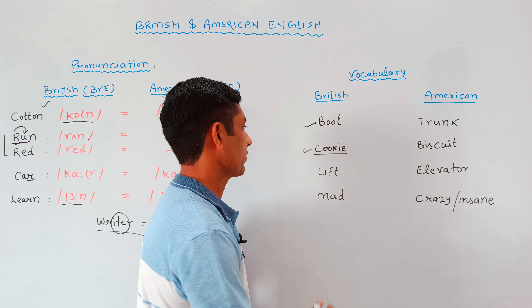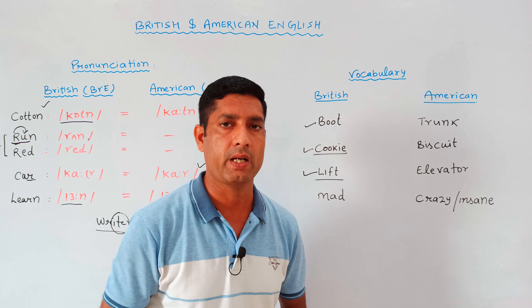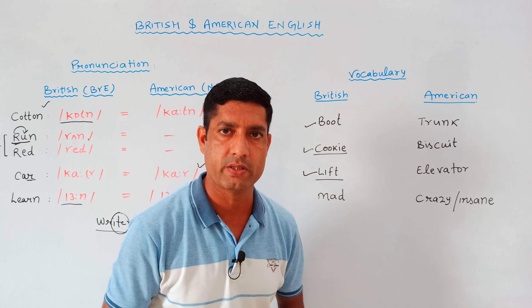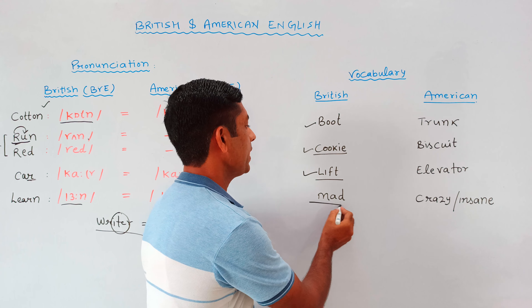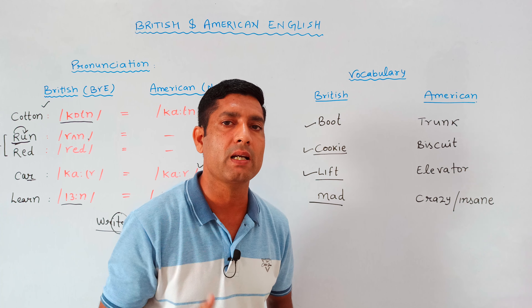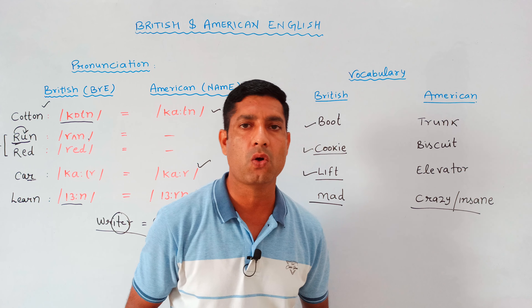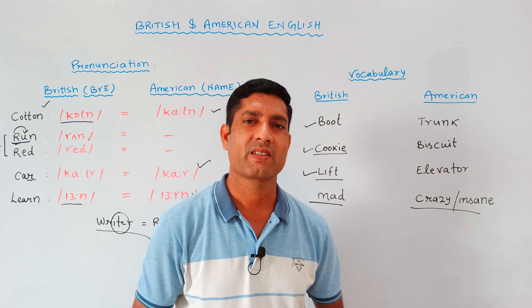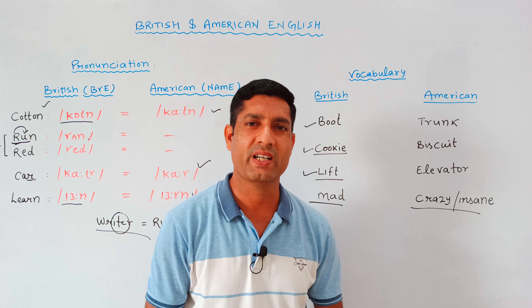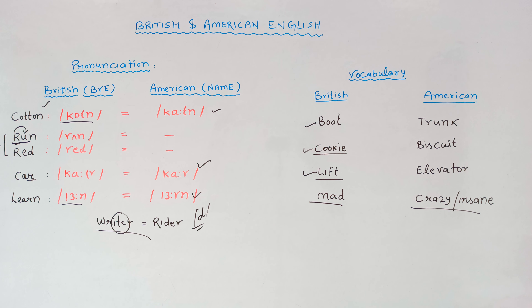The next point is that when T falls between two vowels in American English, it is pronounced as a soft D sound. That is why 'writer' and 'rider' sound very similar in American English.